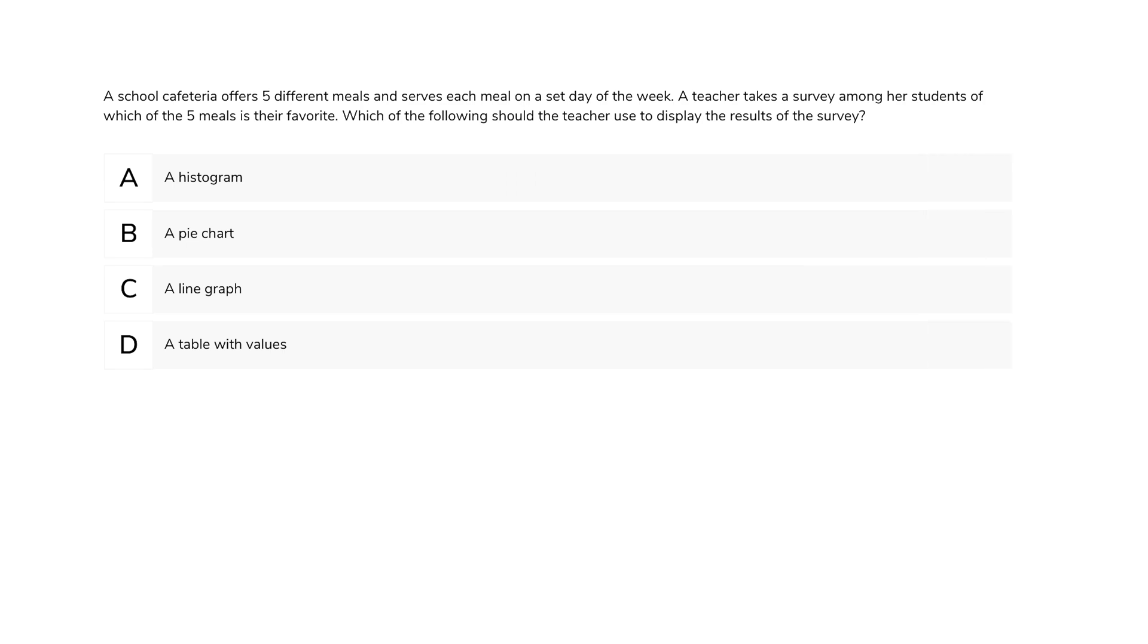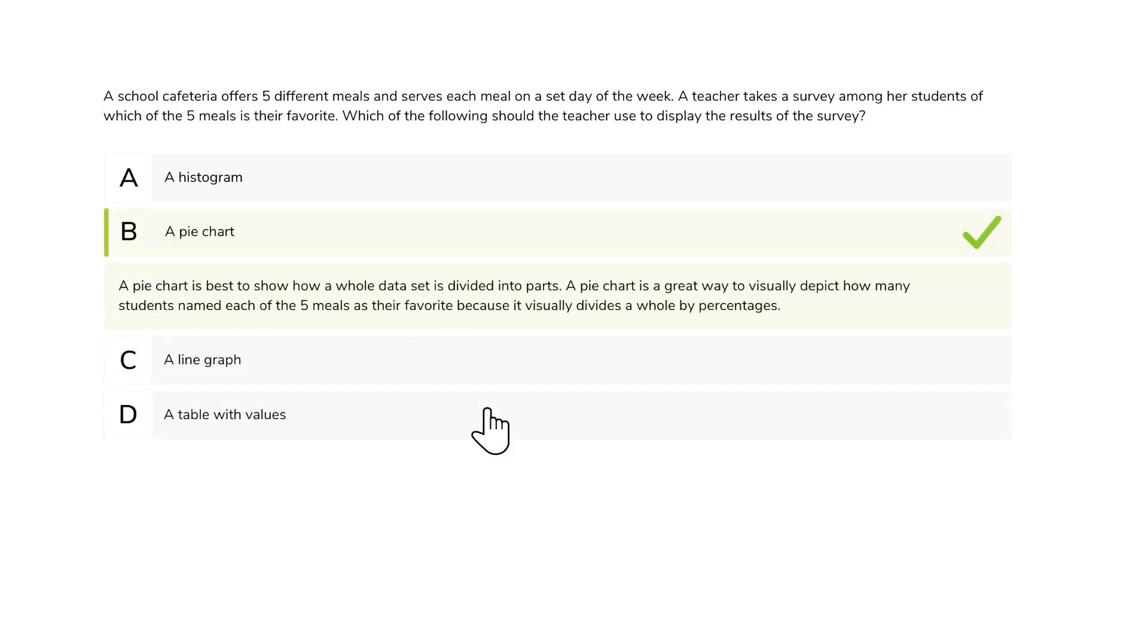What about data representation? A school cafeteria offers five different meals and serves each meal on a set day of the week. A teacher takes a survey among her students of which of the five meals is their favorite. Which of the following should the teacher use to display the results of the survey? A pie chart is a great way to visually depict how many students named each of the five meals as their favorite, because it visually divides a whole by percentages. So, this choice is best.